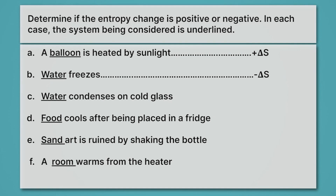For C, water condenses on cold glass. Here, water is condensing — that means going from a gas to a liquid. And so since it's going from gas, which is relatively high entropy, to a liquid, which is relatively low entropy, it's decreasing in entropy.